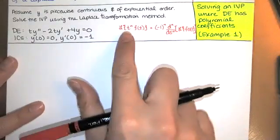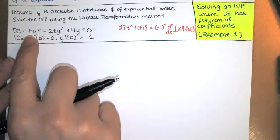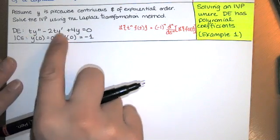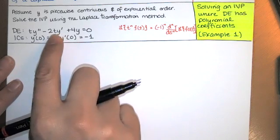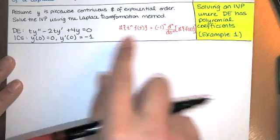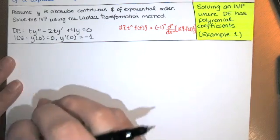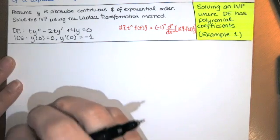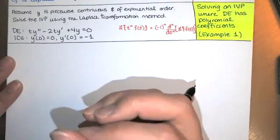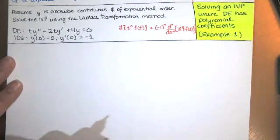We're going to use that here, and whenever we have a coefficient of y double prime or y prime that involves t, that's appropriate. So this is going to be a little bit different than all of the IVPs that we solved where the differential equation had constant coefficients.